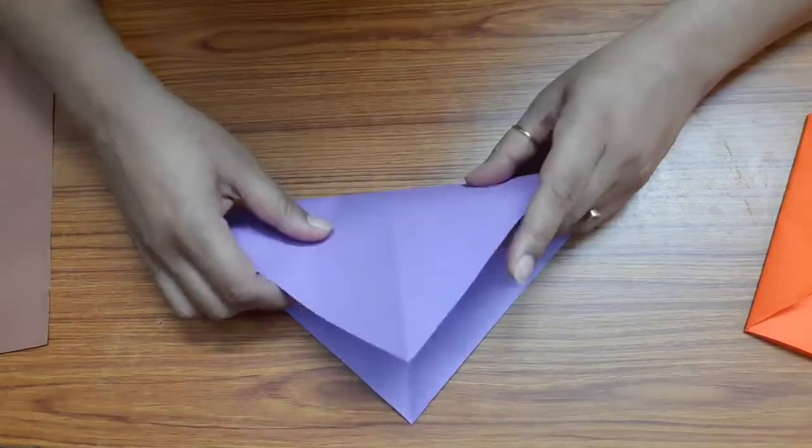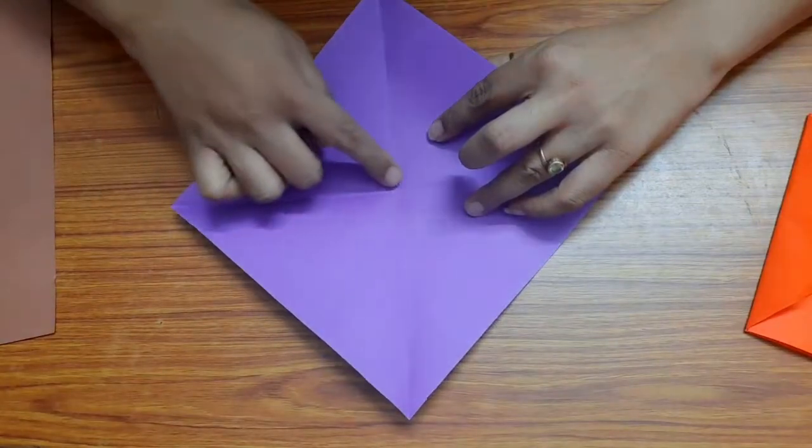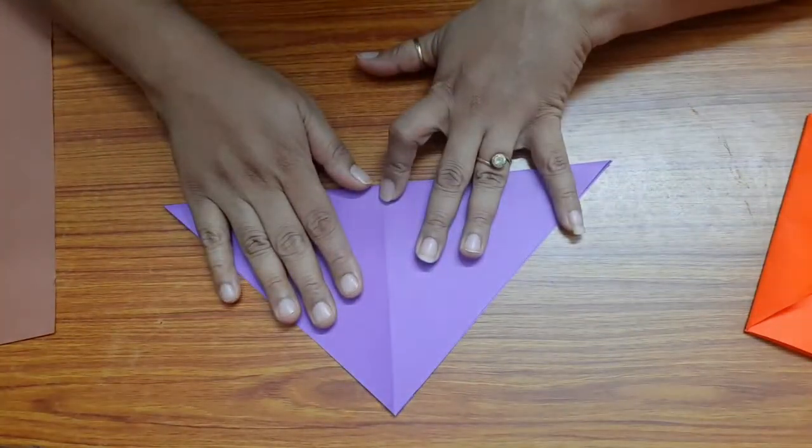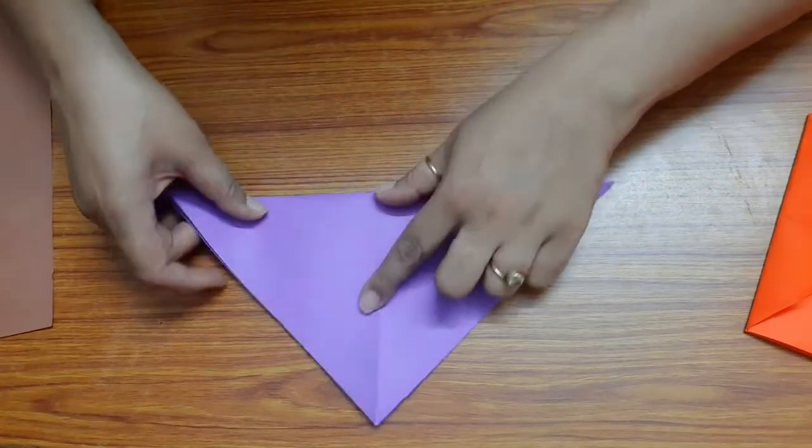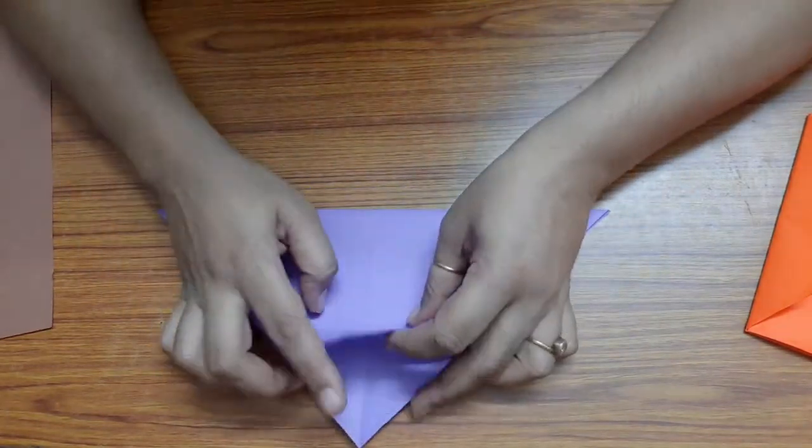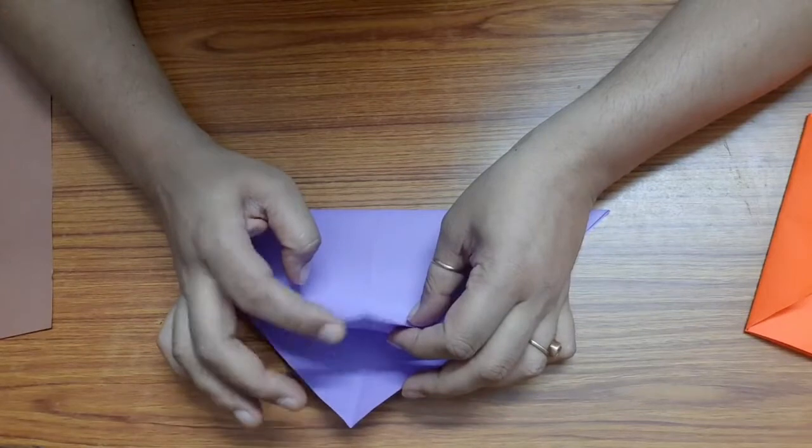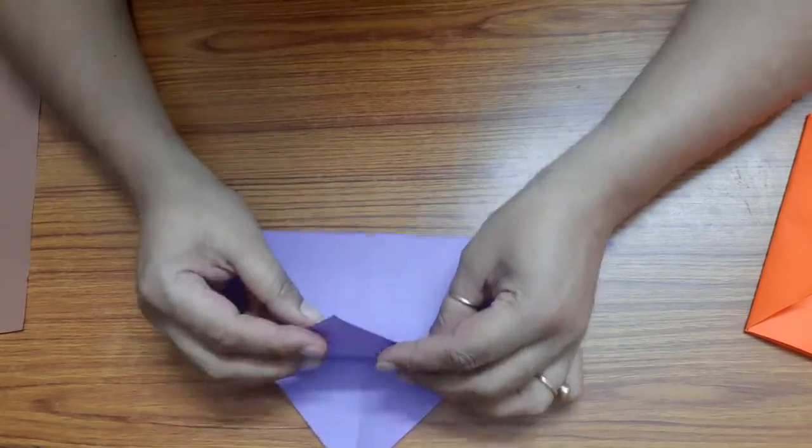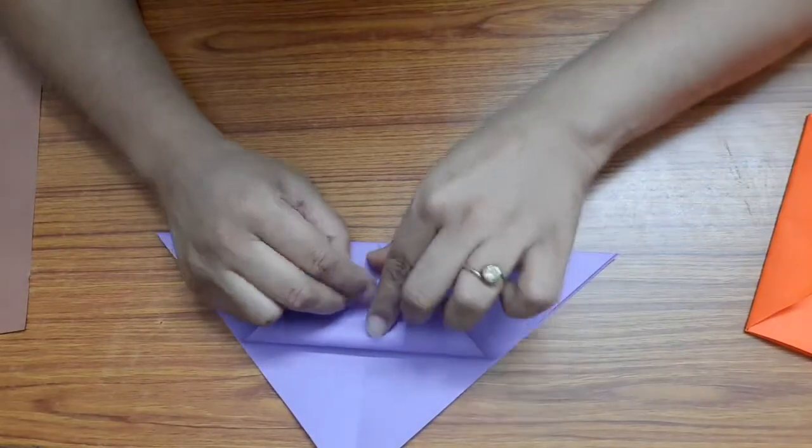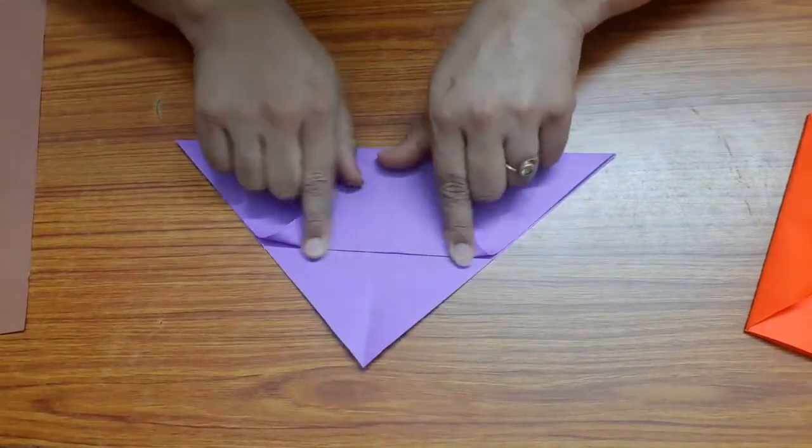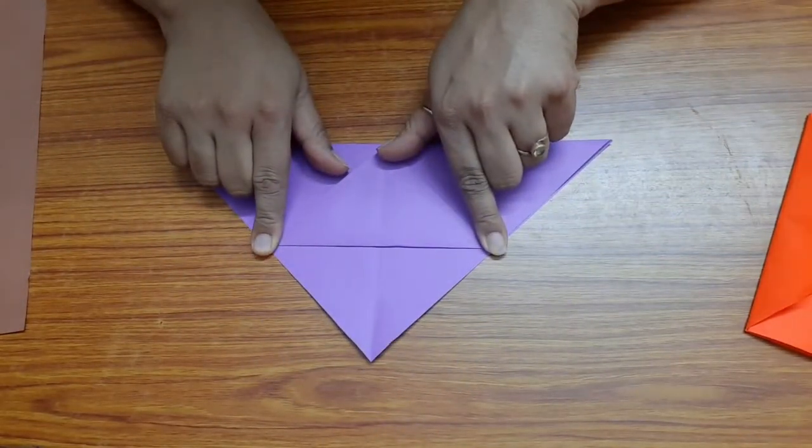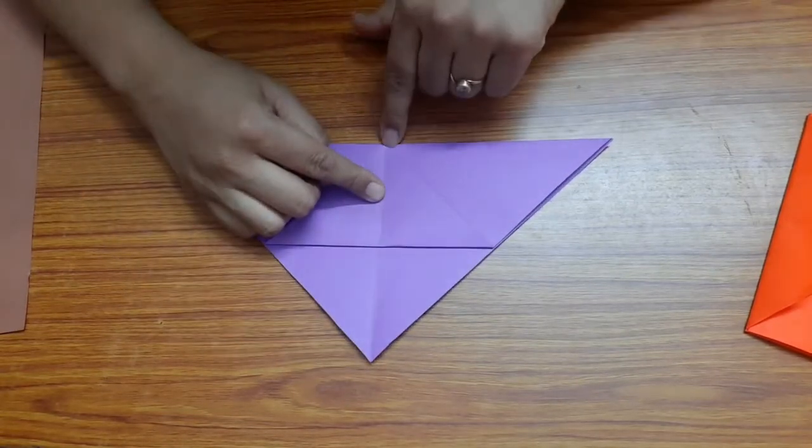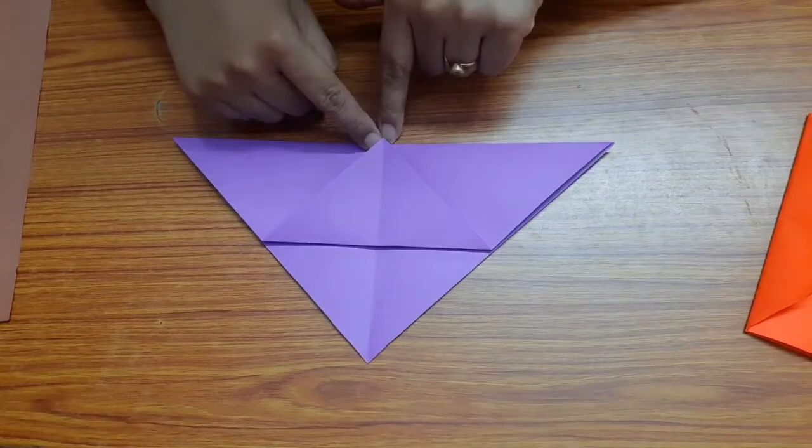Hold any one diagonal. Now that we have the center here, hold any one diagonal. Here we have two corners - bring one corner to the center.